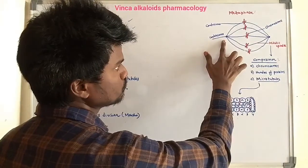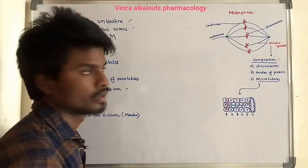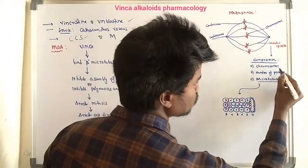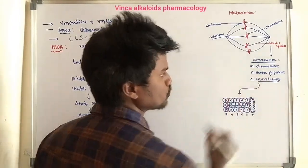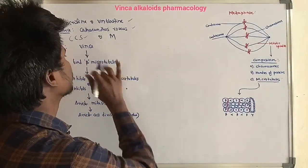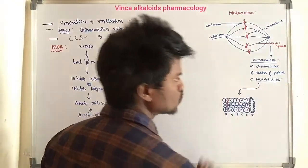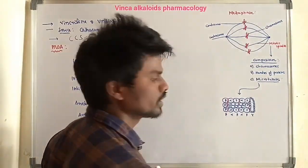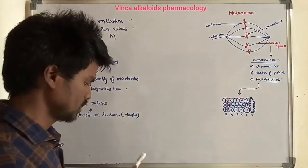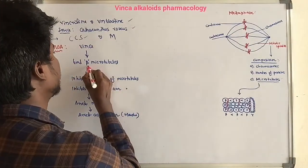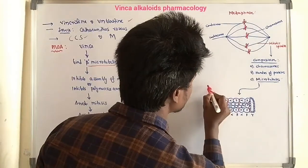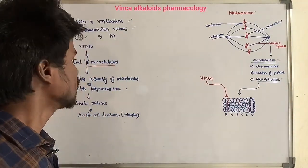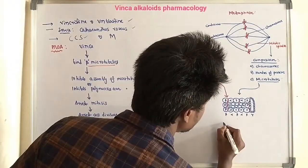Looking at the diagram: in the central zone, all chromosomes are aligned at the centromere. This structure is the mitotic spindle, which contains chromosomes, proteins, and microtubules. Microtubules have an alternating arrangement of alpha, beta, and gamma tubulin subunits. When Vinca Alkaloids are administered, they bind to beta-tubulin, inhibiting the assembly of microtubules.